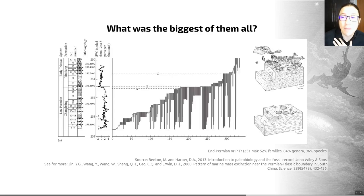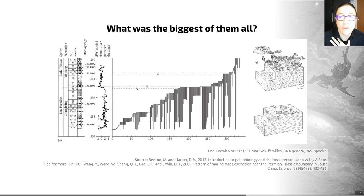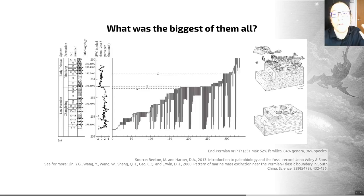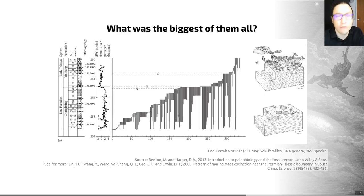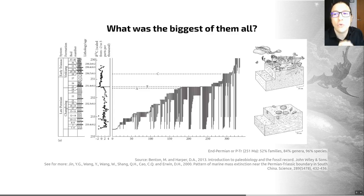It led to the extinction of the trilobites, the eurypterids — those are sea scorpions — lots of echinoderms including blastoids, and it led to the extinction of our major corals that were alive up until this point: the tabulates and the rugose corals. Eventually, those are replaced by the scleractinian corals alive today. It affected every major marine invertebrate group and the large terrestrial amphibians and reptiles alive during the Permian period. In short, the Permo-Triassic event saw the virtual annihilation of all living organisms.